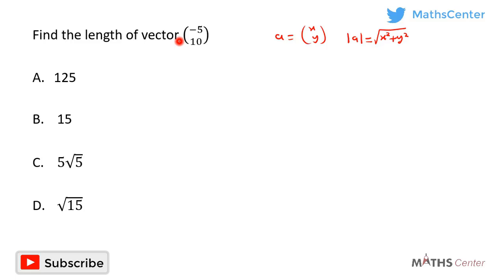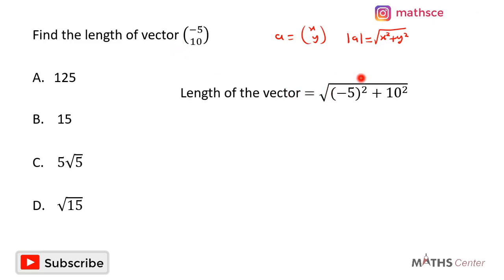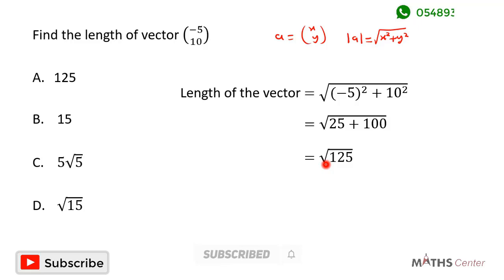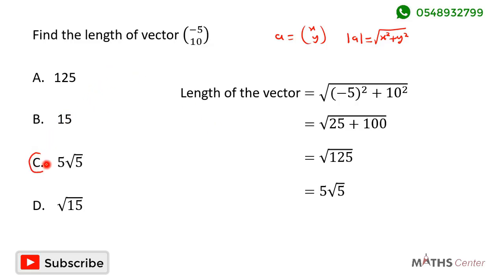Applying that here, the length of the vector equals the square root of the x component squared plus the y component squared. The x component is −5, so we have (−5) squared, and the y component is 10, so 10 squared. This gives us square root of 25 plus 100, which is square root of 125. Simplifying to its simplest form gives us 5 root 5. So the length of this vector is 5√5, and the correct option is C.